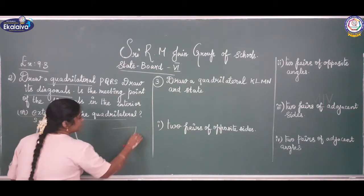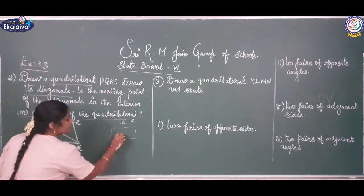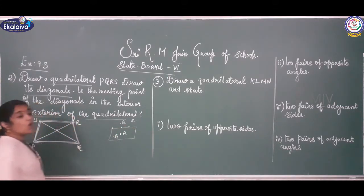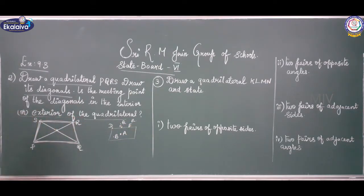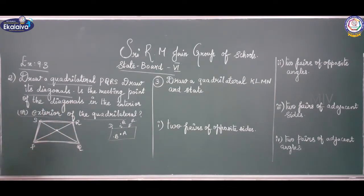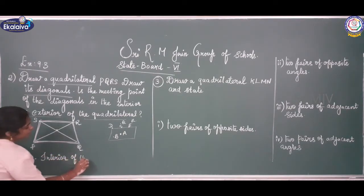How can I say this? See, for example - Q and R marked here means this is the exterior. Inside means points like A, B marked inside the figure - those are interior points. C, D, E are points on the quadrilateral, and Q and R are exterior points. So the meeting point of the diagonals is in the interior of the quadrilateral.